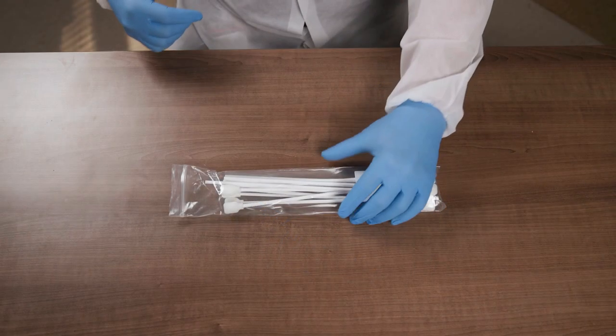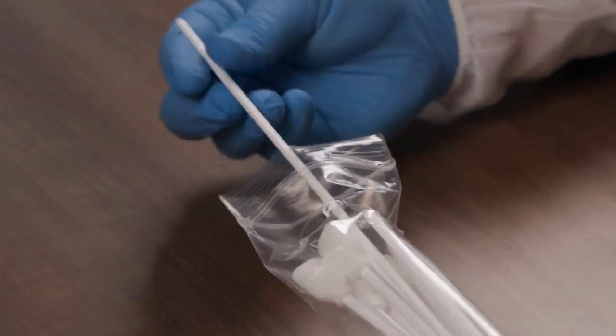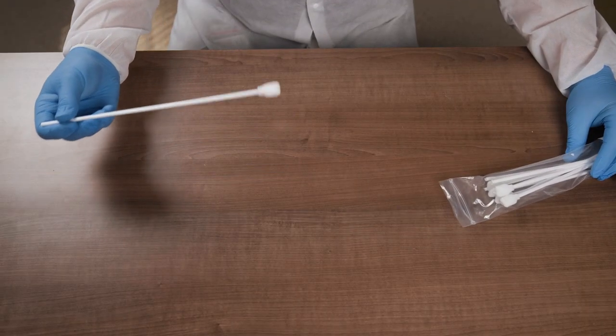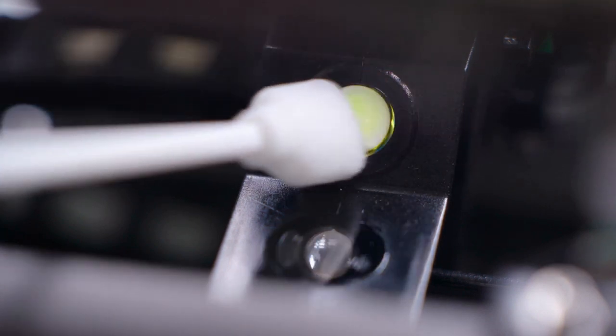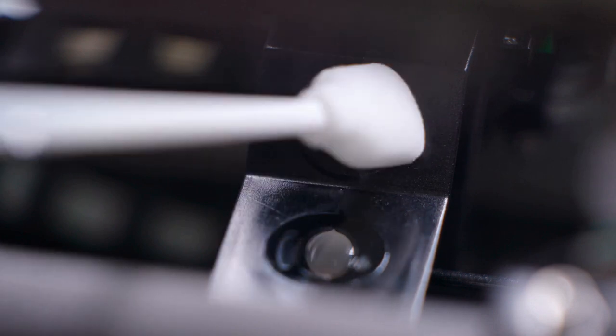Remove one Vitus Optic Clean swab from the pouch and reseal the pouch. Clean both optics using one swab, rubbing the swab over each lens surface five times to clean the entire surface.